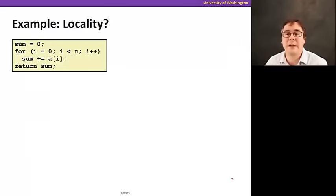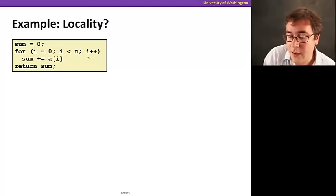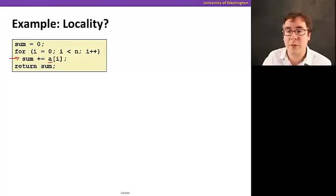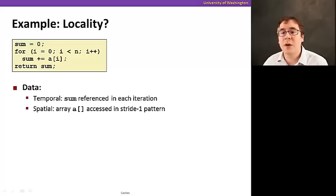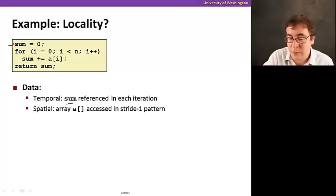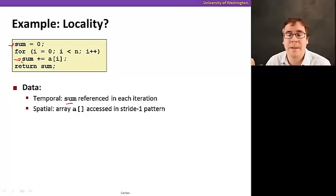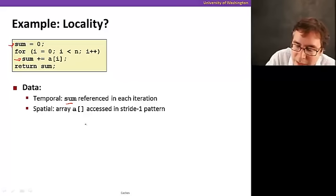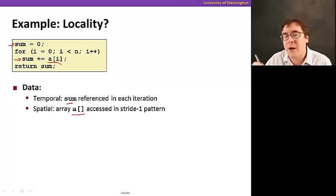So let's see an example of a program that has locality. Suppose you have this loop here, and this loop is iterating over array a and adding it to the sum variable. Where is locality here? Let's start with data. Well, so with data, the variable sum is referenced multiple times. We act over and over again here inside our loop. Each iteration of the loop reads it and writes it. It reads it because you're doing sum equals sum plus a of i.